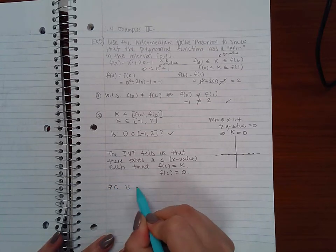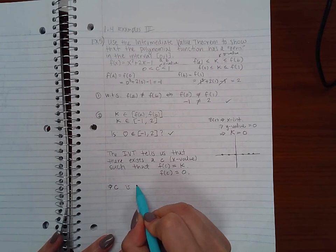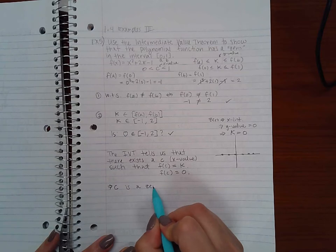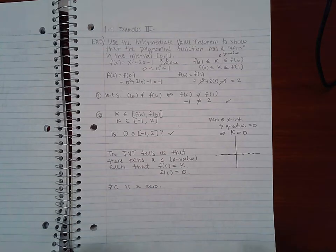Well if there's an x value that gives me a y value of 0, then that means that c is a zero.